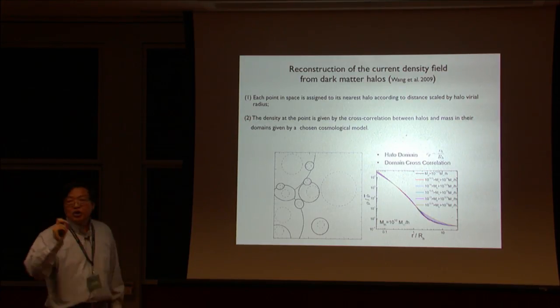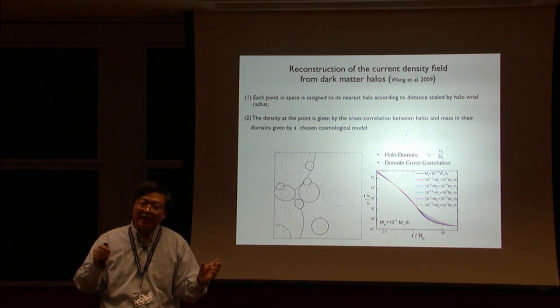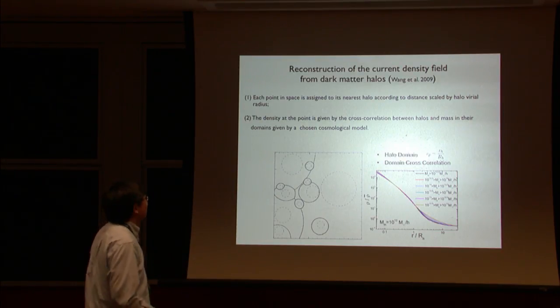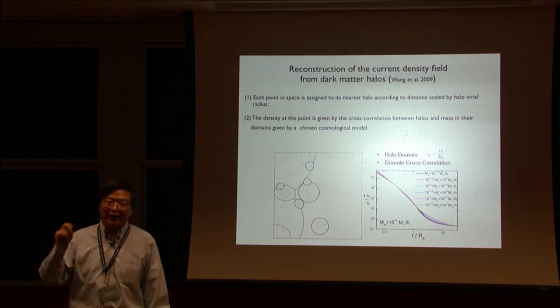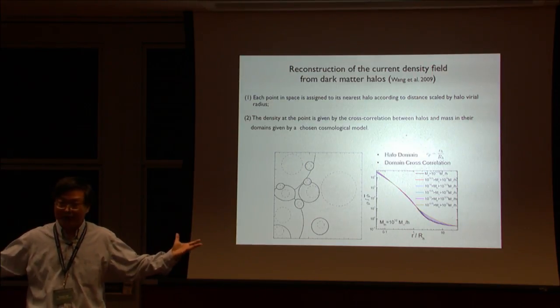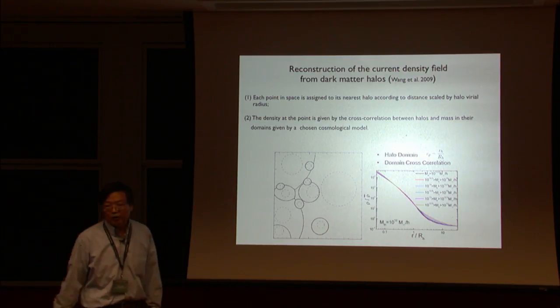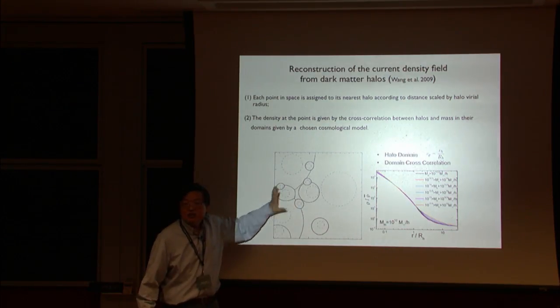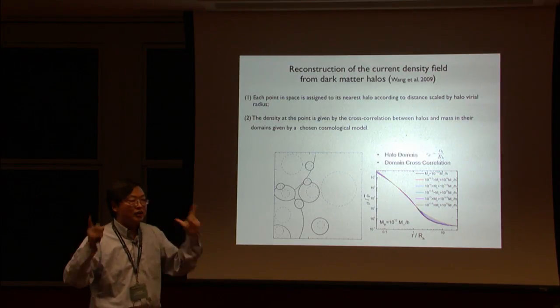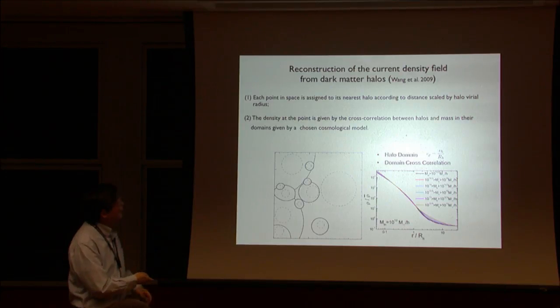Will it work? It can. So what you do here is that you use halos above a certain mass of structure. Here I present the results. I only use halos with mass above 10 to 12 solar mass because small halos are very difficult to observe. I will come back to that. With that, what I do is that I use n-body simulations. I do a cross correlation of these kind of halos with the rest of the mass. I can do that calibration. We're using so-called domain correlation function. Basically each point in the space is assigned to a halo.